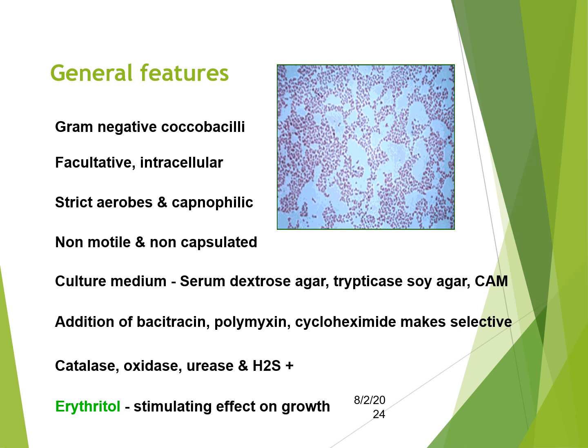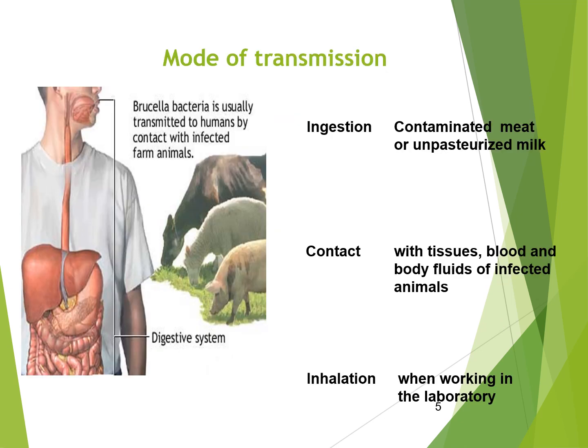The culture media used to grow them are serum dextrose agar, tryptic soy agar, and BCYE. Adding bacitracin, polymyxin, and cycloheximide makes it selective. The biochemical testing features are catalase, oxidase, urease, and hydrogen sulphide positive. Erythritol has a stimulating effect on growth.